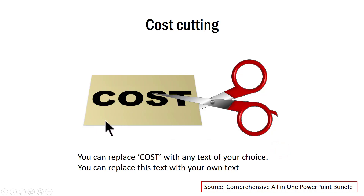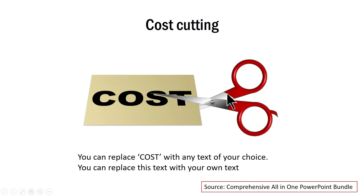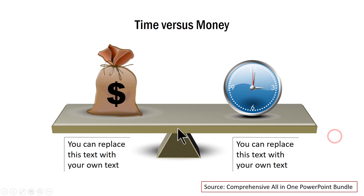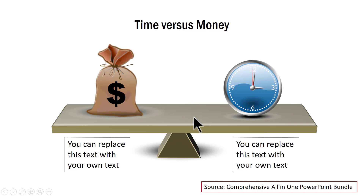This is nothing but a simple rectangle on which I have written this particular text — which of course can be changed anytime — and this is a photo. I combine these two to create this simple graphic of cost cutting. This is a graphic that I created: a 3D platform and a 3D prism, and I combine this with these two photos to create the concept of time versus money.